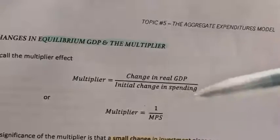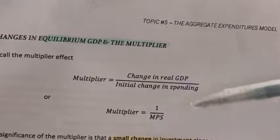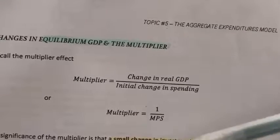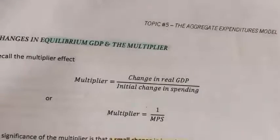Okay, so as you can see, there's a negative relationship between multiplier and the MPS simply because the more people save, the lesser they consume. So, the lesser they consume, the lesser will be the power of the multiplier effect.